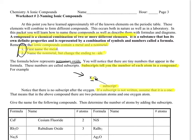Sometimes it helps to visualize these with drawings. This formula here is telling us that we have two potassiums—so there's an atom of potassium, here's another atom of potassium—and we have one oxygen.